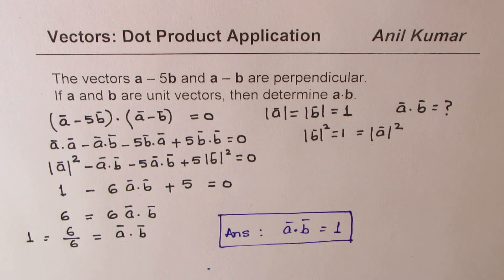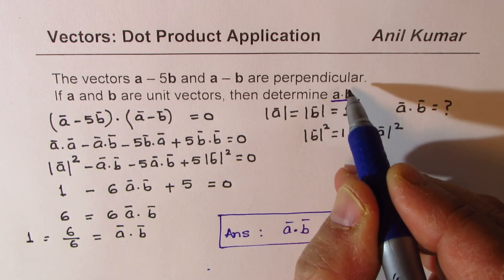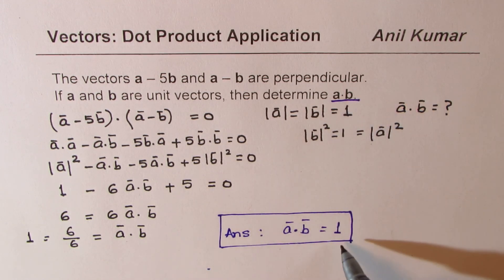So that is a question for you. Anyway, we just wanted to find what A dot B is. It is supposed to be a scalar quantity, and in this case, we get A dot B as 1. So I hope that helps.